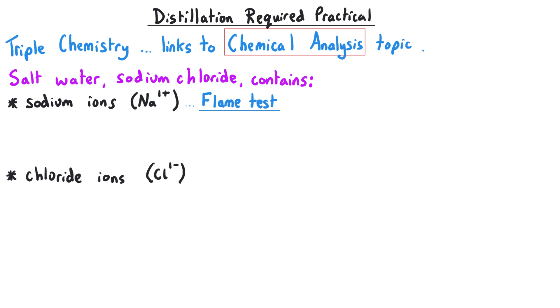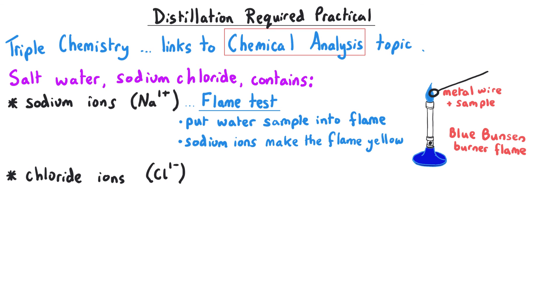To test for sodium ions, you would use a flame test where you put a sample of water into a flame. The sodium ions present in the water would show a distinct yellow flame. For the chloride ions, you would test this by carrying out the halide ion test, which can be used for any ion from group 7.